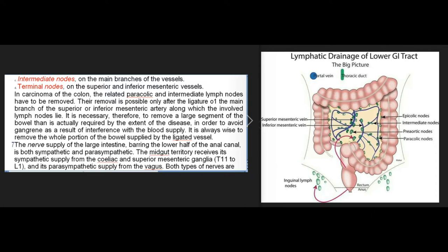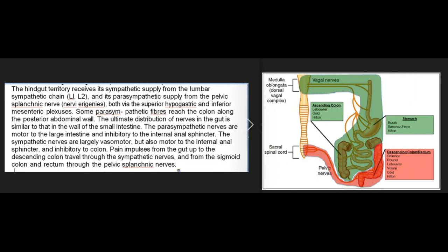The nerve supply of the large intestine, apart from the lower half of the anal canal, is both sympathetic and parasympathetic. The midgut territory receives sympathetic supply from the coeliac and superior mesenteric ganglia (T11 to L1) and parasympathetic from the vagus, distributed through the superior mesenteric plexus. The hindgut territory receives sympathetic supply from the lumbar sympathetic chain (L1, L2) and parasympathetic from the pelvic splanchnic nerves (nervi erigentes), via the superior hypogastric and inferior mesenteric plexuses. Some parasympathetic fibers reach the colon along the posterior abdominal wall.